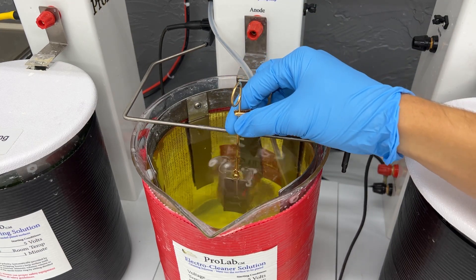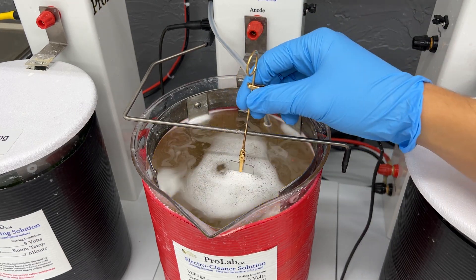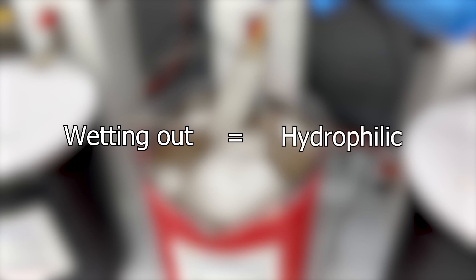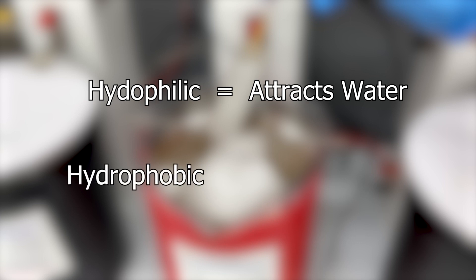Hey everyone, today in this video we are going to be talking about wetting out for both brush plating and bath plating. So what is wetting out? Wetting out is the process of turning something hydrophilic. Hydrophilic means the item attracts water, while hydrophobic means the item repels water.